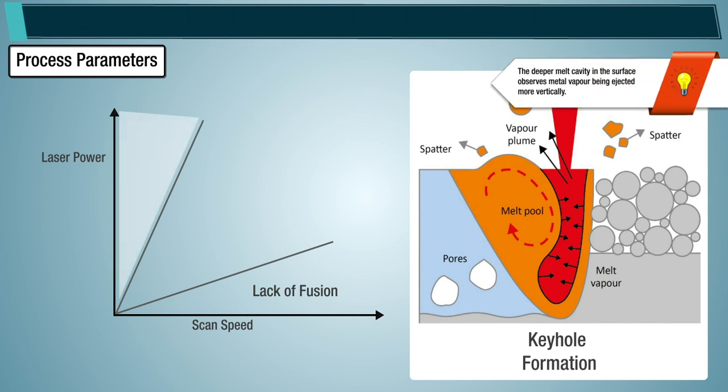Note: the deeper melt cavity in the surface observes metal vapor being ejected more vertically. The increase in energy input increases melt pool turbulence and spatter formation.